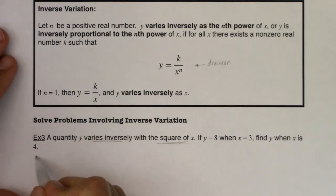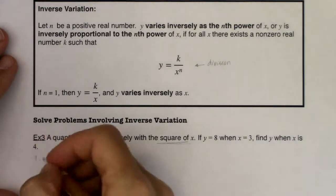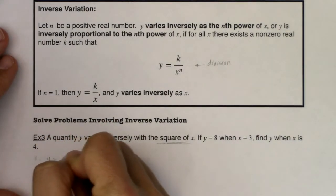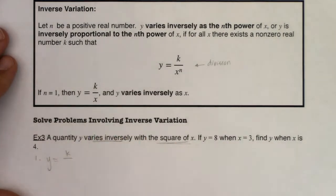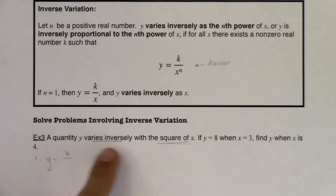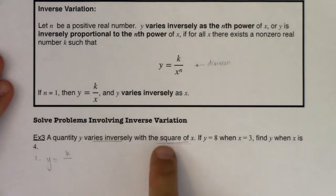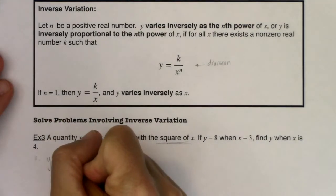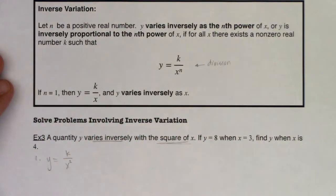The first thing I would want to do was set up my general equation for this variation problem. And I see y is varying inversely. When I see inversely, I know I'm going to do k divided by a number. And again, that's in contrast to had this said varies directly, I would have had k times a number, or not so much a number but an expression. Let's see what that expression is. It says the square of x here. So I'm literally going to write x squared.